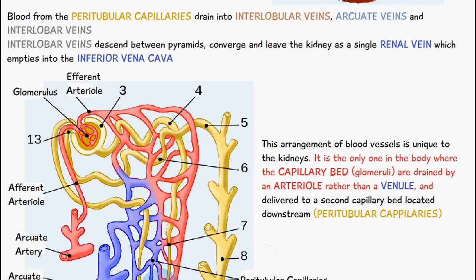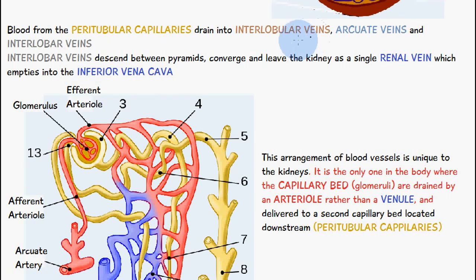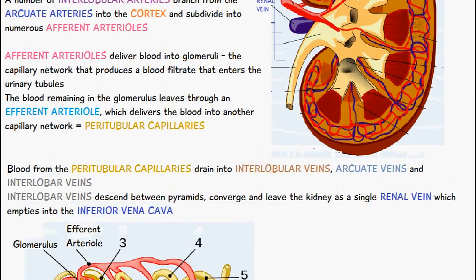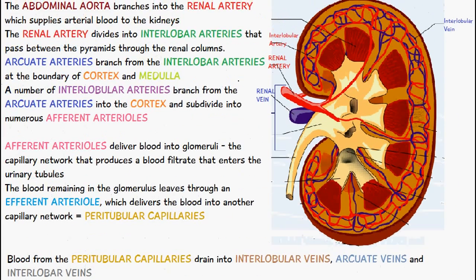The blood from the peritubular capillaries drains into the interlobular veins, the arcuate veins, and the interlobar veins — the same principle as the arteries but in reverse, with the same names. The interlobar veins descend between the pyramids, converge, and leave the kidney as a single renal vein, which empties into the inferior vena cava. You can see the interlobar vein and then the renal vein through which blood leaves the kidney.